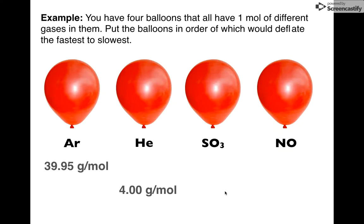Sulfur trioxide, add those up: 80.07. Nitrogen monoxide, also just on the periodic table, add nitrogen to oxygen. You get 30.01.